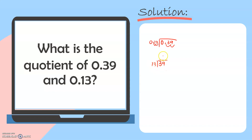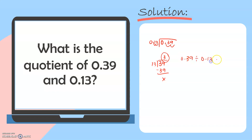Our new numbers now are 39 and 13. 39 divided by 13 is 3, and 3 times 13 is equal to 39. There's no remainder here and there's no more digit to bring down. So 3 is already our final answer. Therefore, 0.39 divided by 0.13 is equal to the whole number 3.